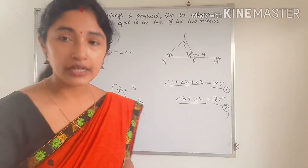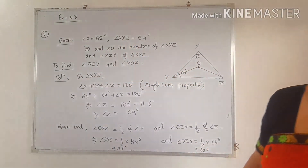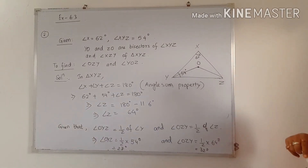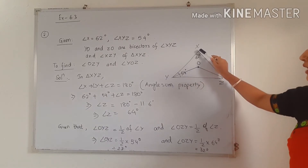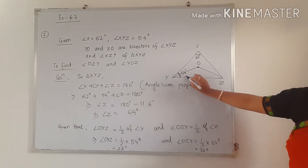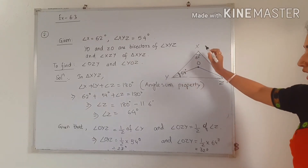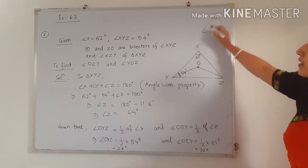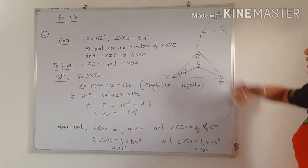Now I am starting the questions from exercise 6.3, question number 2. Given: angle X equals 62 degrees and angle XYZ equals 54 degrees — this full angle Y is 54 degrees. Concentrating on the big triangle XYZ: angle X and angle Y are given, but angle Z is not given.